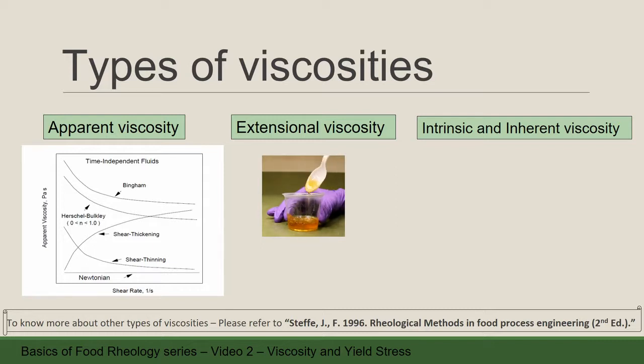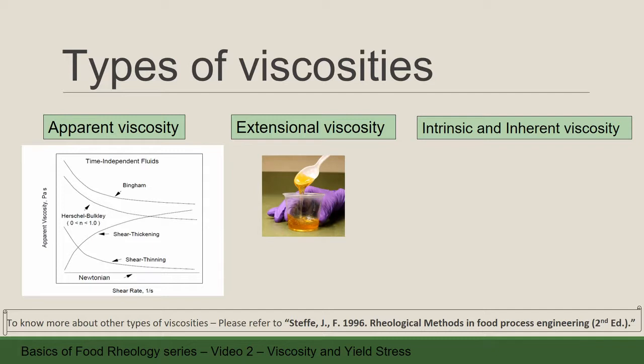Extensional viscosity is the resistance to the extensional flow. Extensional flow happens due to the extension or stretching. In the extensional flow, we get a type of permanent deformation which is known as sagging. In daily life, we can see examples of extensional flow in dough making, the stretching of bubble gum, spooning corn syrup, or honey.